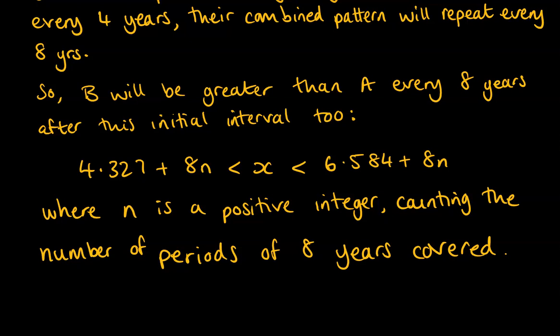So if we wanted the interval that was in the first eight years, N would be zero. So it's just the 4.327 up to 6.584. If we want the interval that's another two cycles on from that, then N would be 2. And it would give us the interval that was 16 years on from the initial interval. And that is how you find the general solution.